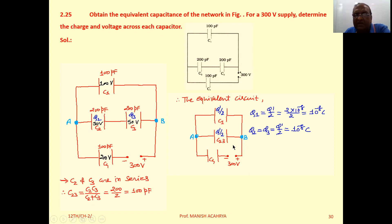C1 and C23 are parallel. Now resultant capacitance between A and B, that will be C' equals C1 plus C23. C1 is 100 pF, C23 is also 100 pF. So 100 plus 100, resultant is 200 pF.